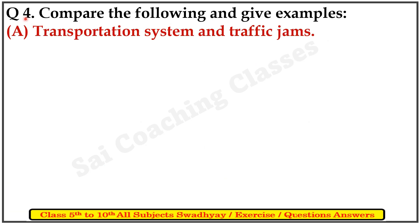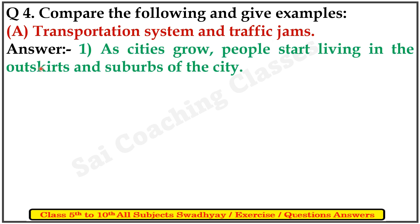Question 4: compare the following and give examples. A: Transportation system and traffic jams. First, as cities grew, people started living in the outskirts and suburbs of the city.